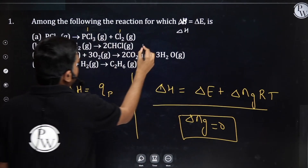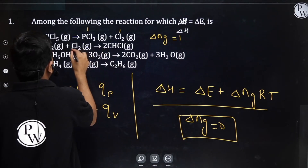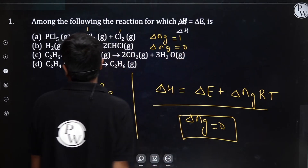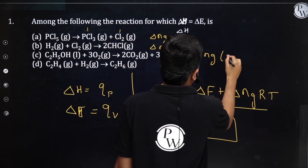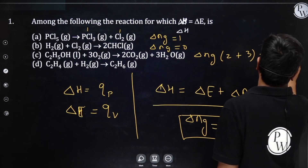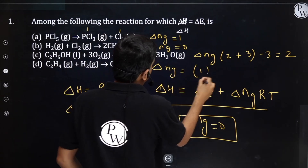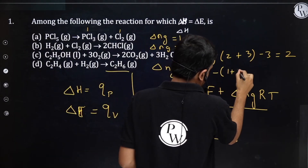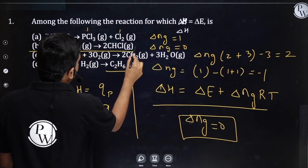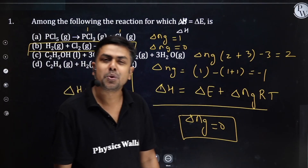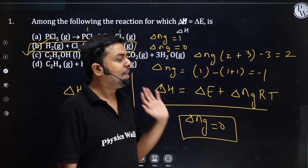Checking each option: Option A gives Δng = 1. Option B: 2 minus (1+1) = 0, so Δng = 0. Option C: (2+3) minus 3 = 2. Option D: 1 minus (1+1) = −1. Only in option B is Δng = 0, so for that reaction change in enthalpy equals change in internal energy. Option B is the right answer.